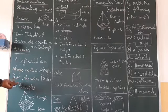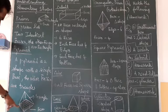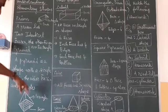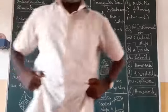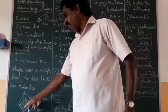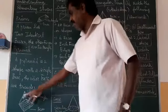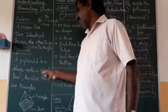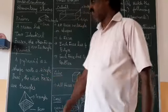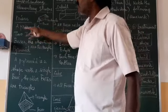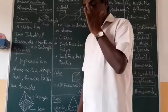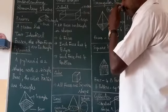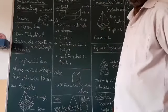A pyramid is a shape with a single base and the other faces are triangles. For example, a square pyramid has a square bottom, and the other sides are triangular, pointing toward a single point at the top. So, a prism has two identical bases (top and bottom in the same shape) with rectangular side faces, while a pyramid has one base with triangular side faces.